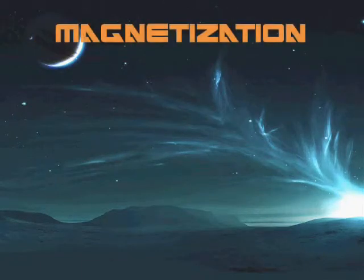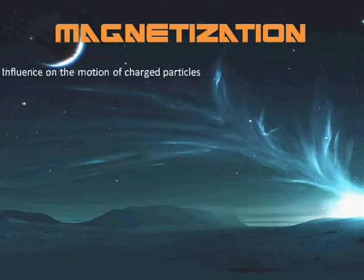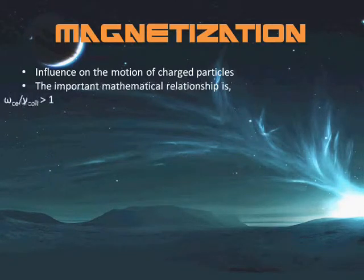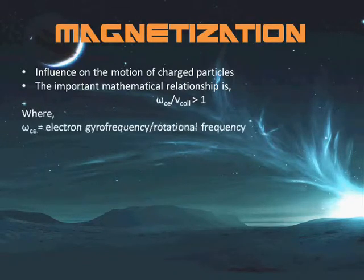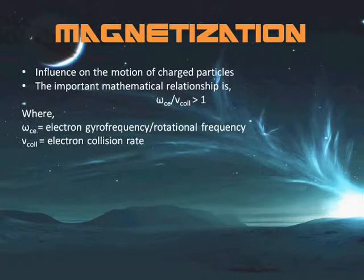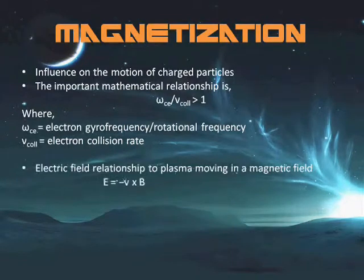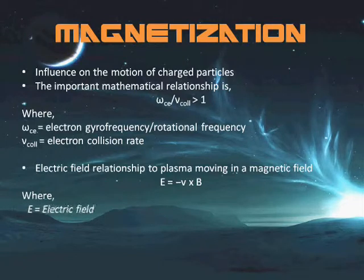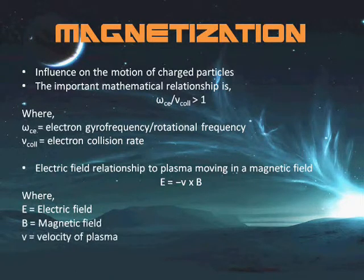A plasma is said to be magnetized if it contains a magnetic field strong enough to influence the motion of charged particles. A quantitative criterion states that a particle on average completes at least one gyration around the magnetic field before making a collision. Magnetized plasmas are anisotropic, meaning properties parallel to the magnetic field differ from those perpendicular to it. While electric fields are usually small due to high conductivity, the electric field associated with plasma moving in a magnetic field is not affected by Debye shielding — the damping of electric fields caused by mobile charge carriers.